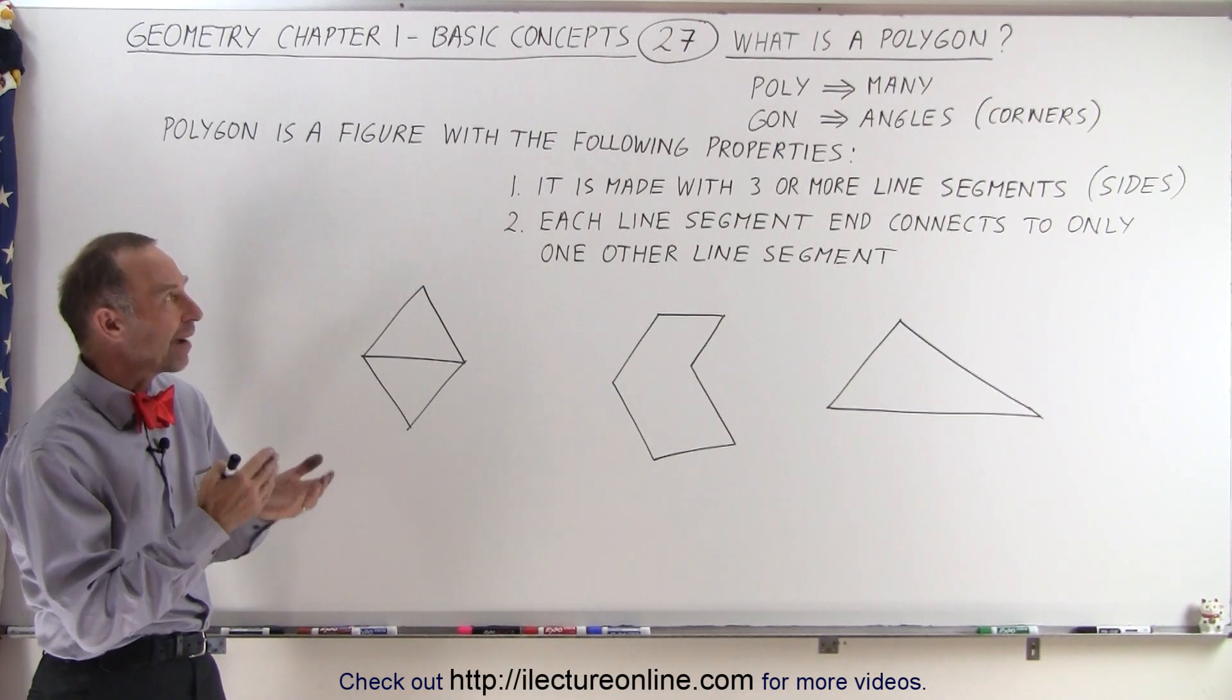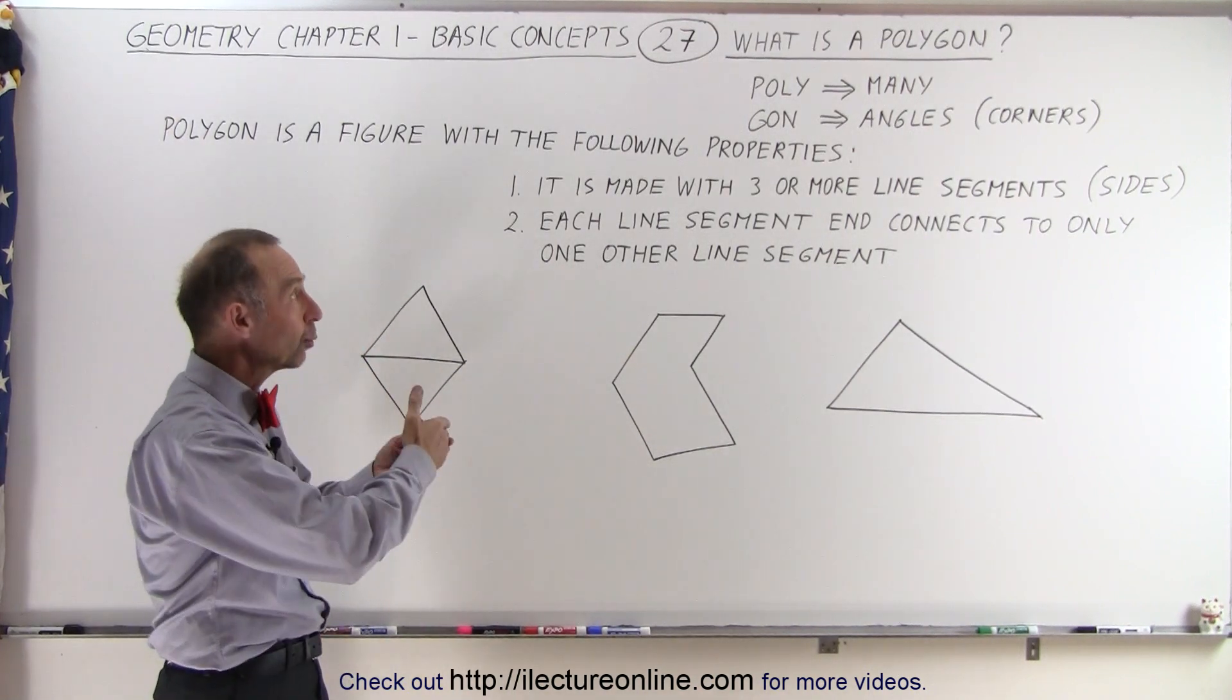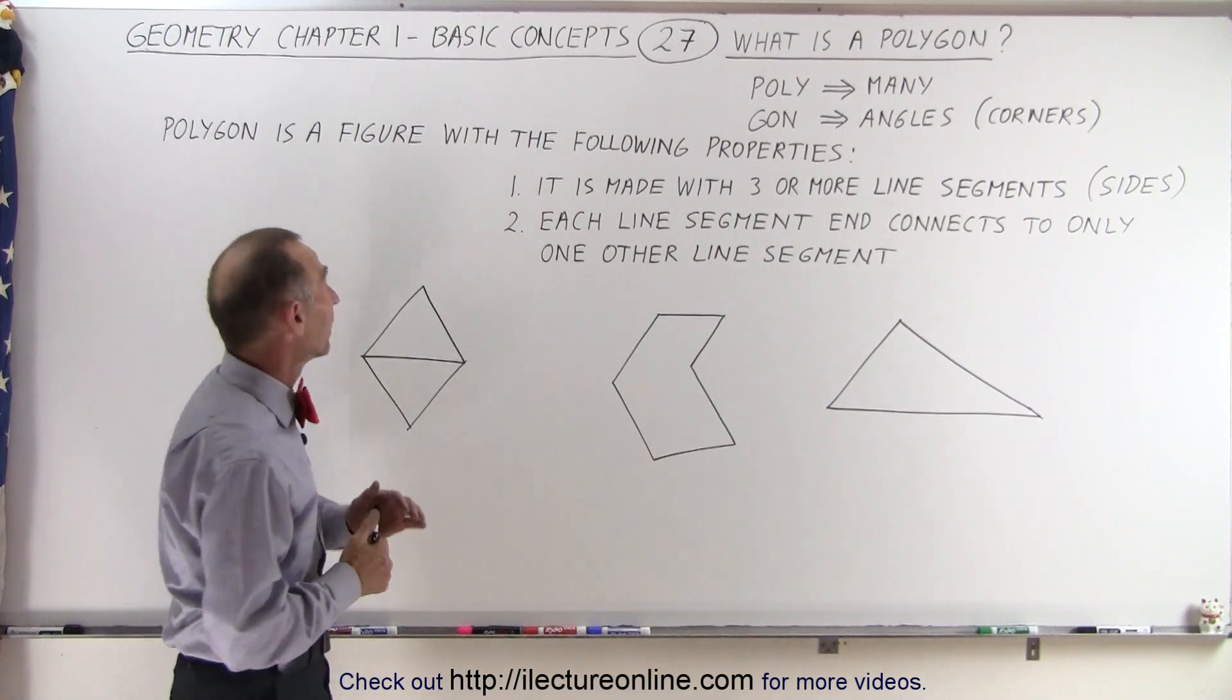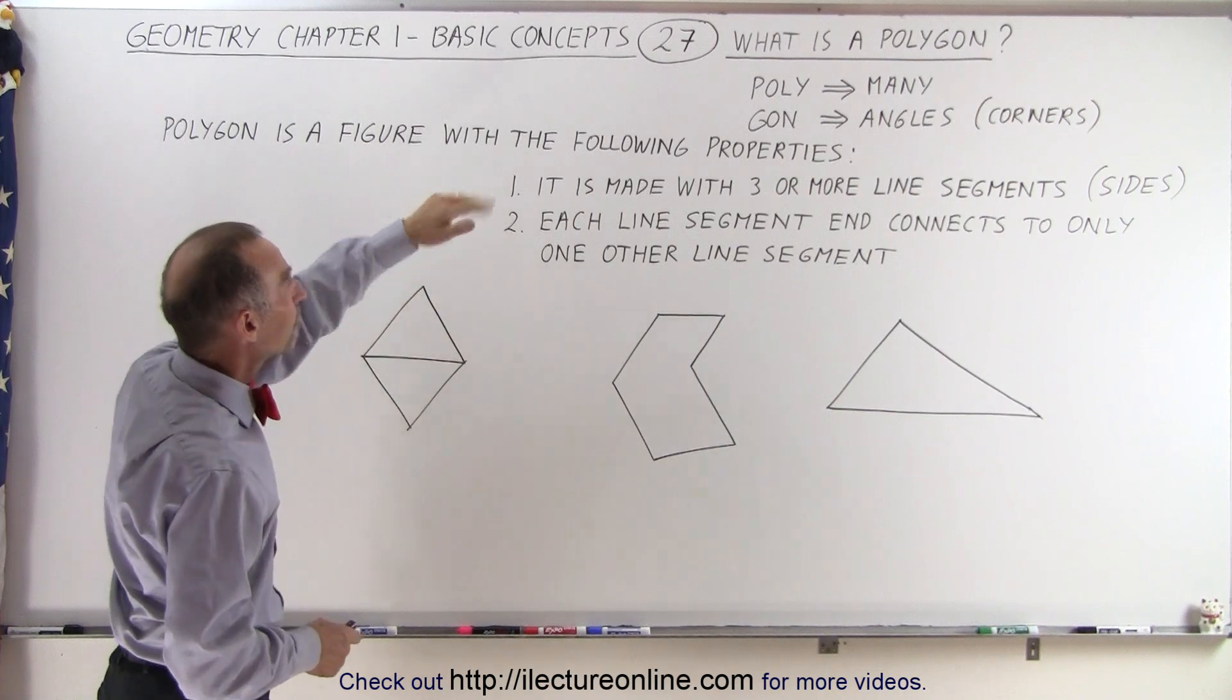A polygon can be defined by the word poly which means many and gon which means angles or corners in the Greek or the Latin. And so therefore a polygon is a figure with the following properties.